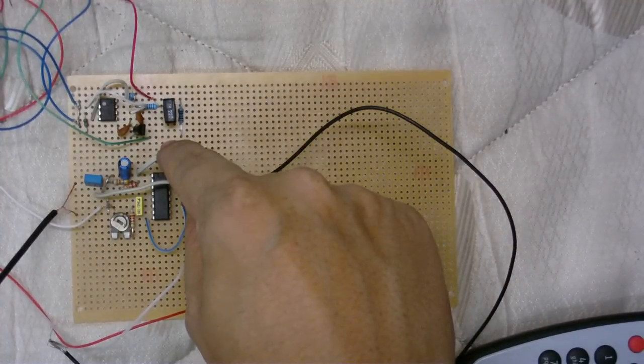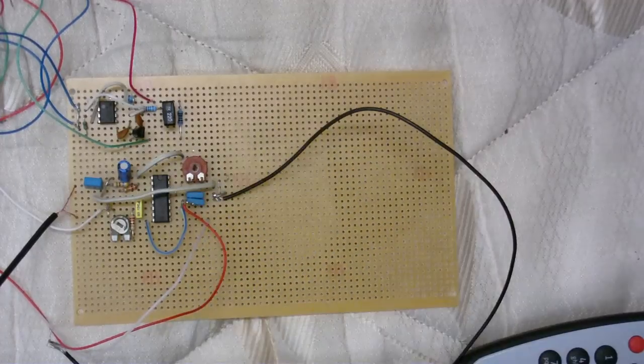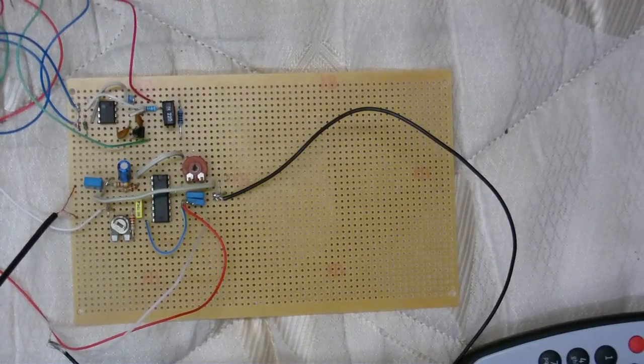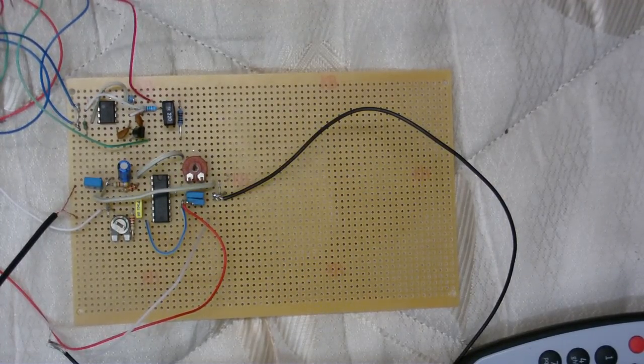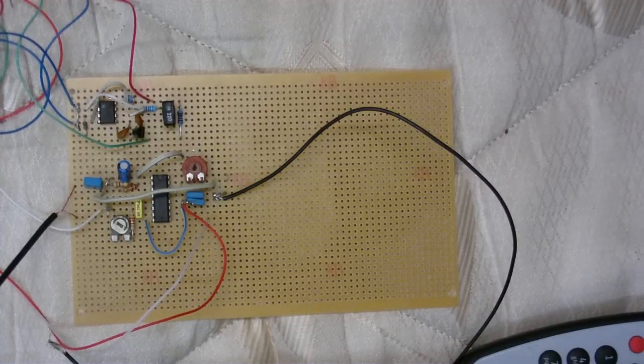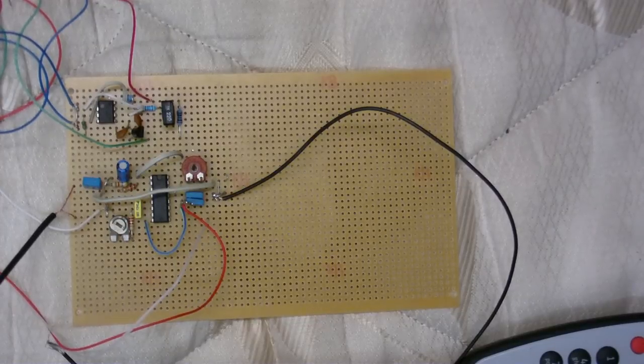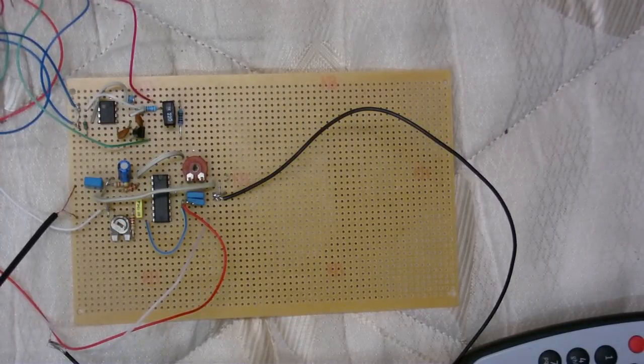And all it was, was this wire here was not connecting this pin on the integrated circuit to the middle pin on the variable resistor. I don't know how I missed that, but after I thought to myself, you twit, and then reconnected it, it's now ready to be tested again, which is what I'm going to do now.